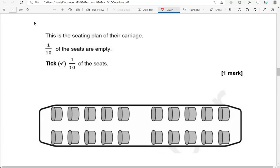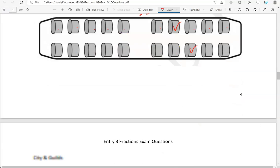Now this is the seating plan of their carriage. Somebody is going somewhere, and this is the seating plan of their carriage. One-tenth of the seats are empty. Tick one-tenth of the seats. So we've got twenty seats. So we need to tick one-tenth. But we've got twenty seats. So we've doubled the ten. We need to double the one as well, which gives us two. So one seat and another seat. So two seats ticked. Any two seats ticked.